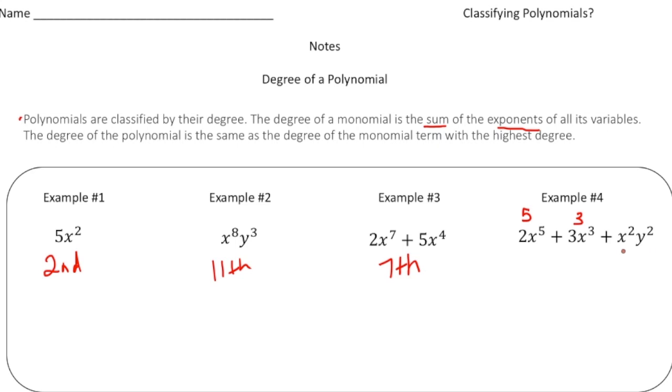And now this monomial, x squared y squared, you can add them together and that would be to the fourth degree. And the fifth is the highest power we have. So the whole trinomial would be to the fifth degree.